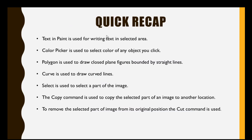Now we will do a quick recap of the chapter. Text in Paint is used for writing text in a selected area. Color picker is used to select the color of any object you click. Polygon tool is used to draw closed plane figures bounded by straight lines. Curve is used to draw curved lines. Select is used to select a part of the image. The copy command is used to copy the selected part of an image to another location, and the cut command is used to remove the selected part of the image from its original position.